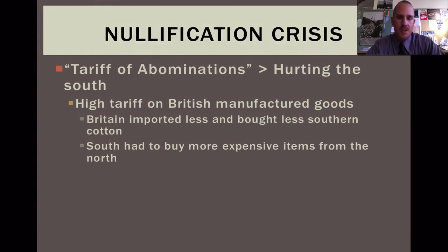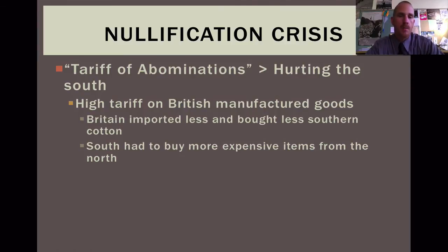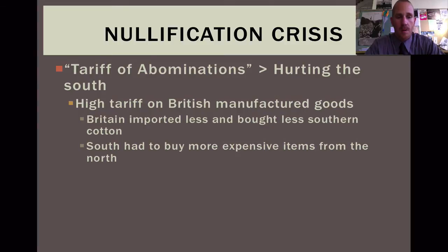Moving forward into the nullification crisis — Andrew Jackson's presidency is just riddled with conflict after conflict. The so-called tariff of abominations, according to John C. Calhoun in South Carolina, is hurting the South as a whole. This tariff puts high duties on manufactured goods, specifically from Britain. The British, facing a high import tariff, start importing less and buying less Southern cotton. Therefore the Southerners have to buy more expensive manufactured items from the North, so the North is becoming rich off of the Southerners.